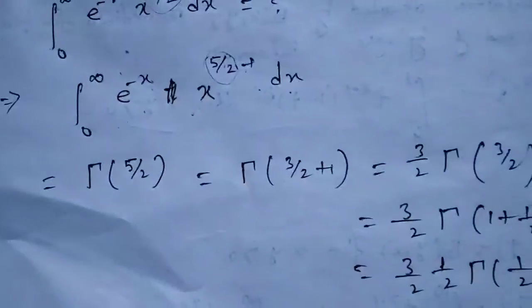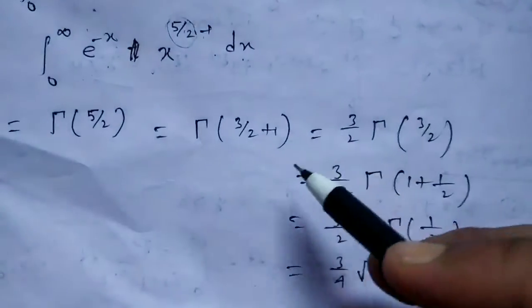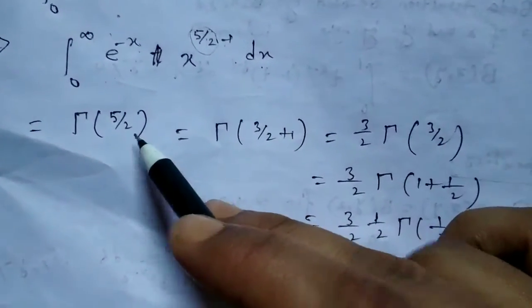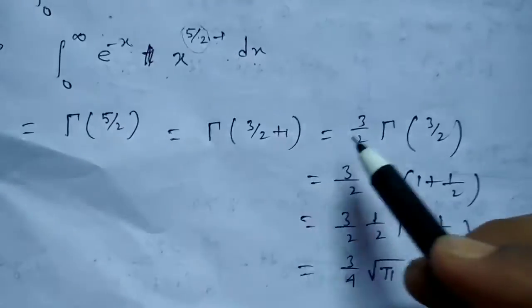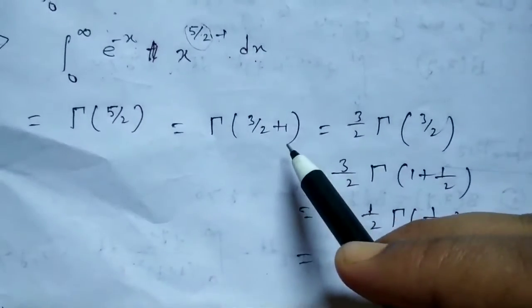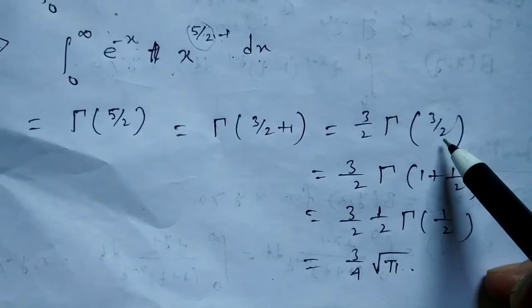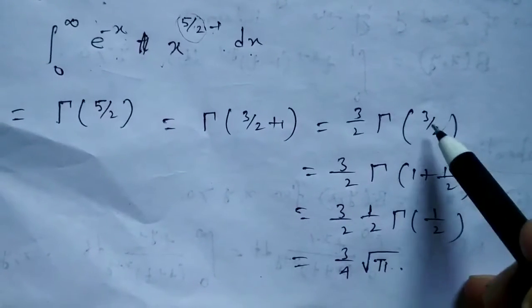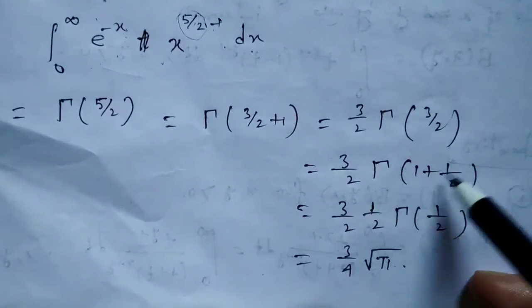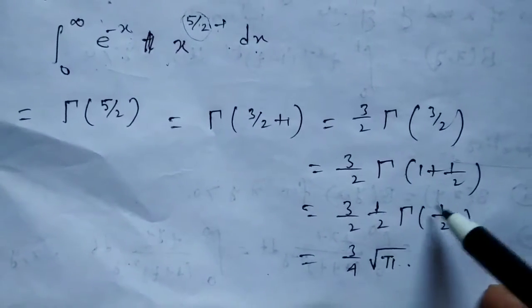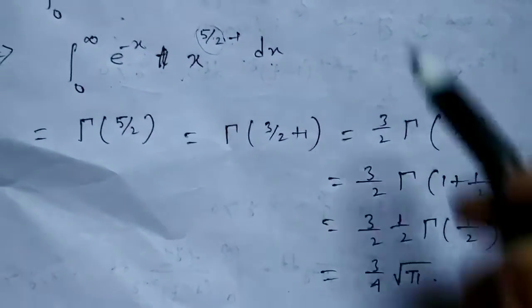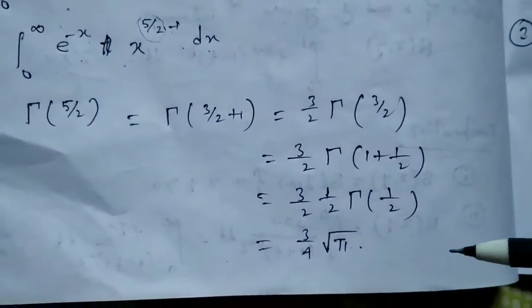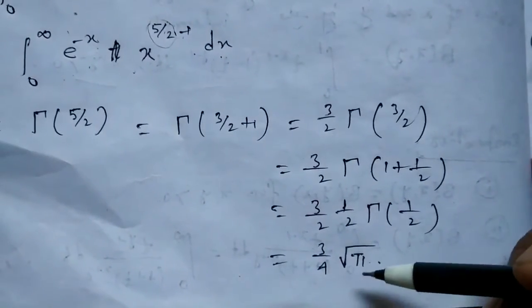So Γ(5/2) = Γ(3/2 + 1) = (3/2) · Γ(3/2) = (3/2) · Γ(1/2 + 1) = (3/2) · (1/2) · Γ(1/2). Since Γ(1/2) = √π, this equals (3/4) · √π.